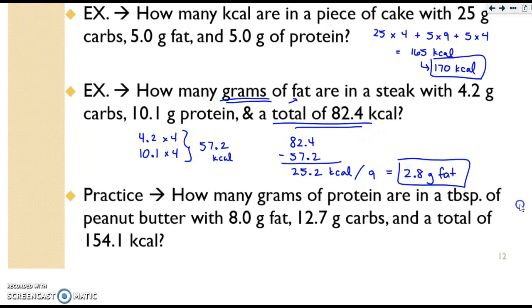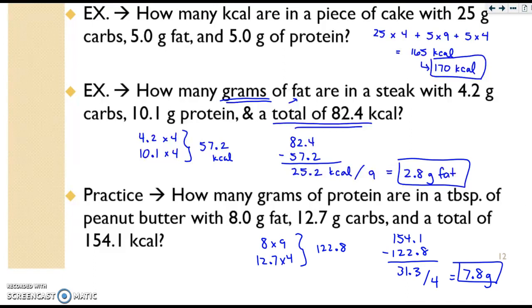At this time, using this second example we just went over as a guide, please pause the video and try the practice problem. For your answer, you should have gotten 7.8 grams of protein. Here, you had to take 8 grams of fat times 9, and add that to your 12.7 grams of carbs times 4, to get a total of 122.8. The difference from the total is 31.3. So 154.1 minus 122.8 gives you 31.3 kcals, and then you would divide that by 4, because this time we're asked for protein, and you should end up with 7.8 grams as your final answer.